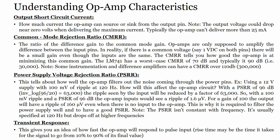Output short circuit current refers to how much current the op-amp can source or sink from the output pin. The output voltage could drop near 0 volts when delivering maximum current. Typically, the op-amp cannot deliver more than 25 milliamperes.